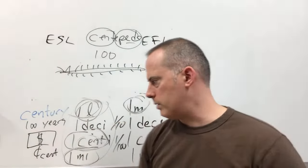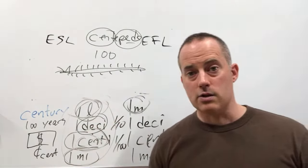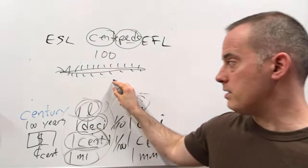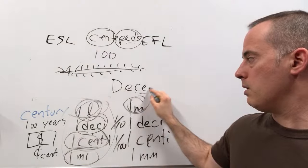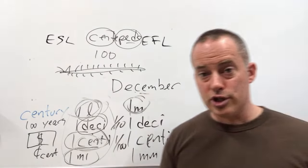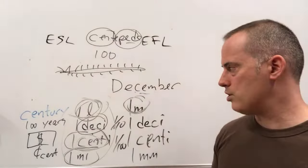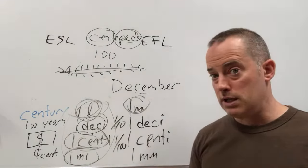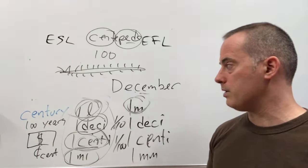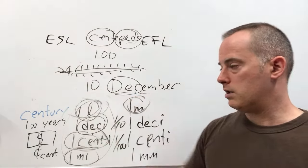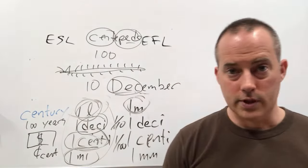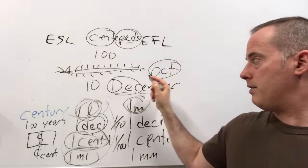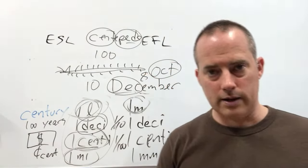'Decade' is also a good example — 'deca' means 10. And interestingly, December should be the 10th month, but it's actually the 12th — it used to be, before the calendar changed. Similarly, October — 'oct' means eight — should be the 8th month.